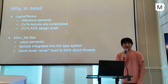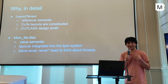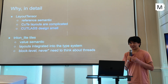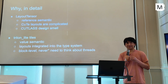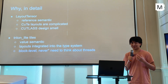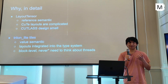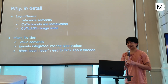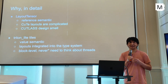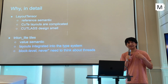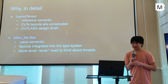Layout tensor is reference semantic, and it gives me a lot of cutlass design smell when using it. From a programming abstraction perspective, I think there's a little bit better you can do. So instead, I copied the core abstraction in Triton into Mojo, which is a value semantic tile. What's really nice is that in Mojo, the layout assigned to the tile can get propagated through the type system.